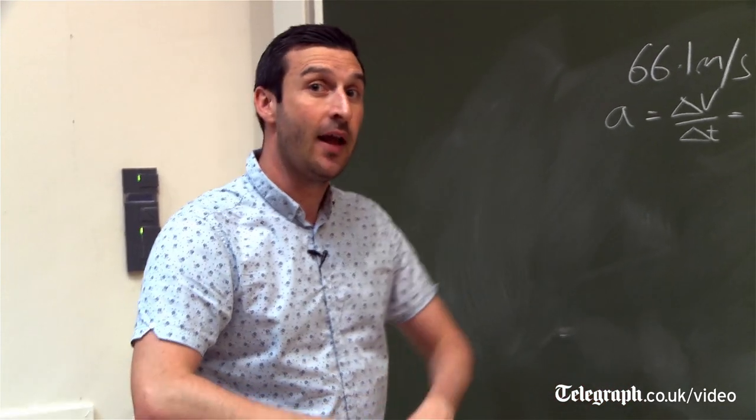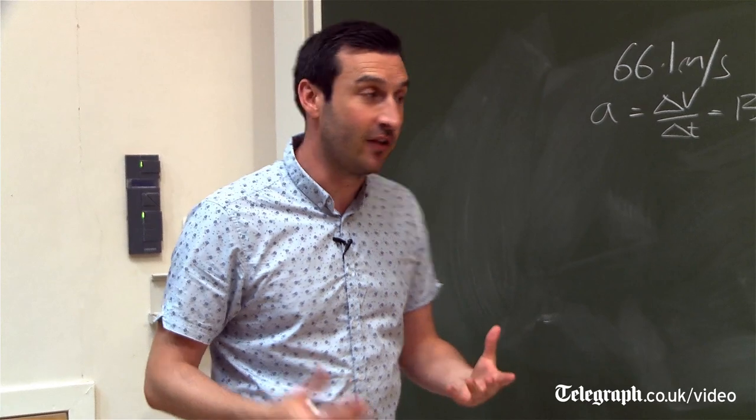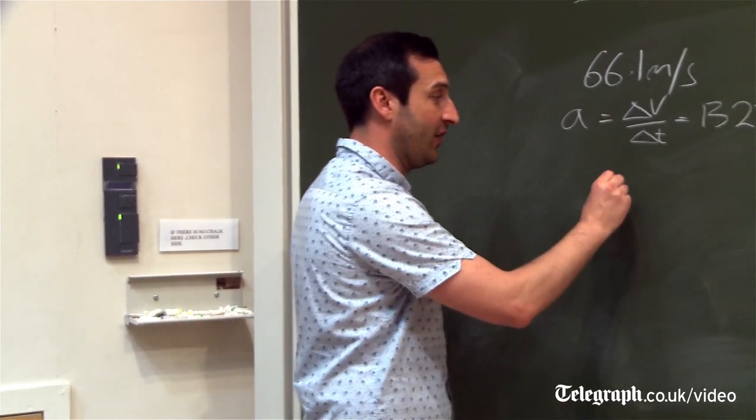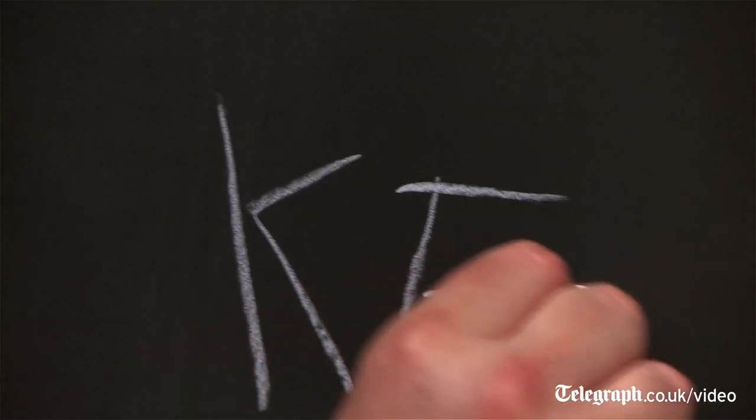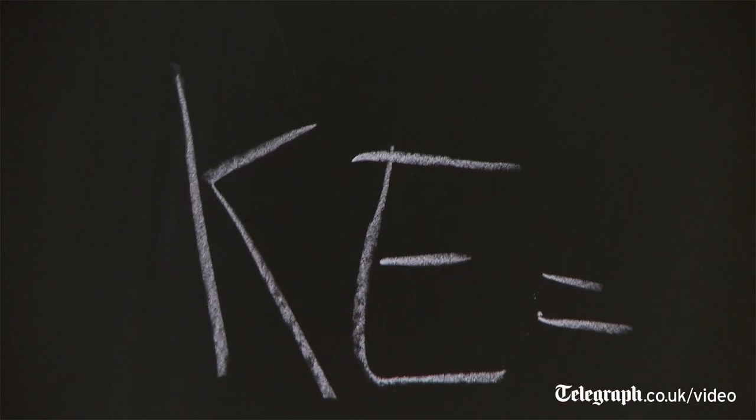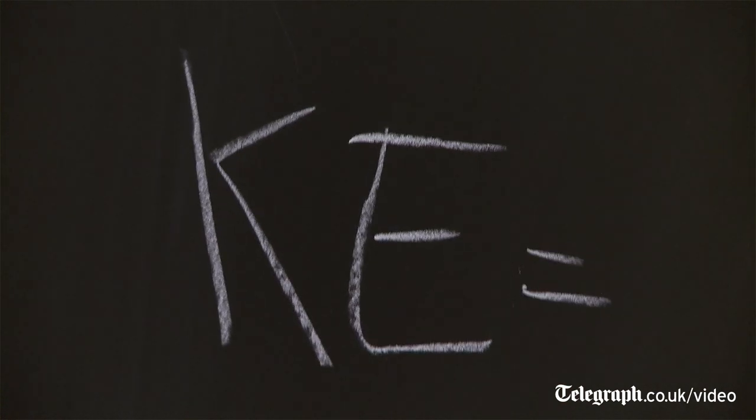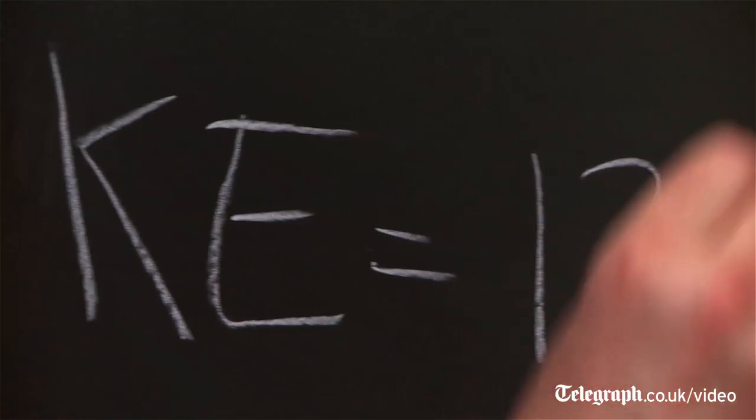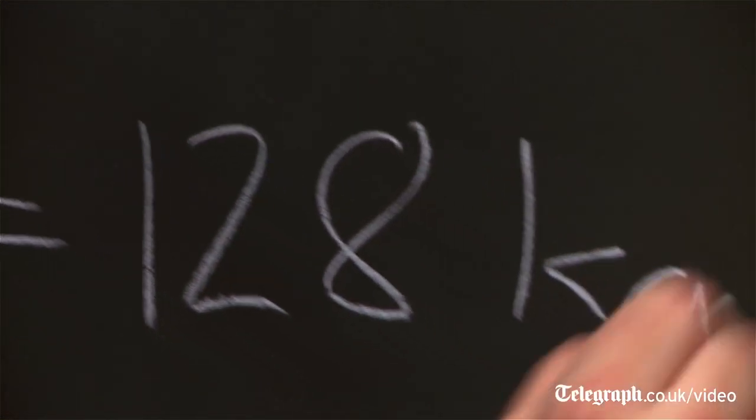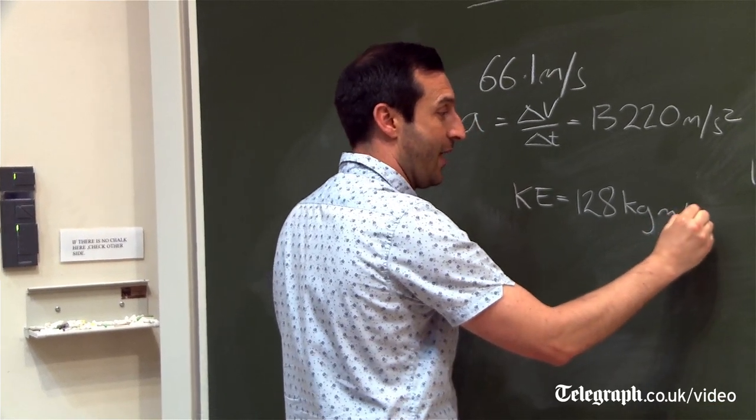Now once the ball's left the racket, it has energy, moving energy, which we call kinetic energy. Now the kinetic energy can be calculated by half the mass times the velocity squared, and this comes out at around 128 kilogram meters per second squared.